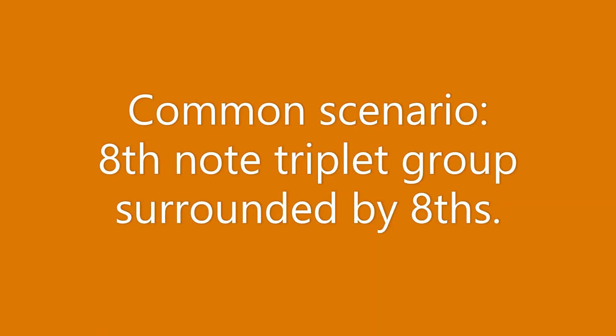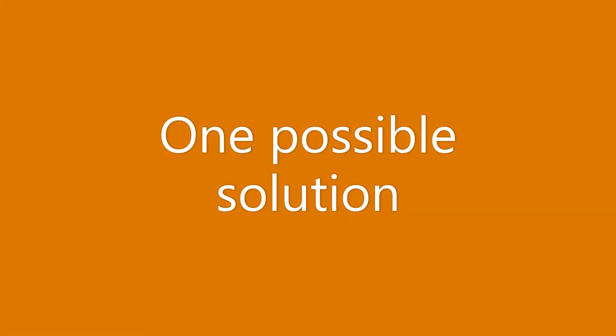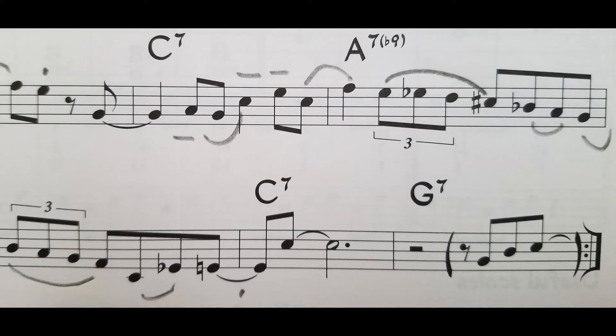Triplets present an unusual exception to the tongue-slur pattern. There are fairly simple ways to cope with an eighth note triplet in the context of a series of other eighth notes. One option is to include an eighth note prior to the triplet, slur through the entire triplet, and one eighth note past — resulting in basically a slur-five pattern. Another option, which often helps with technical difficulties on the trumpet, is to slur an eighth note prior to the triplet into the first two notes of the triplet, then tongue the last note into what follows.